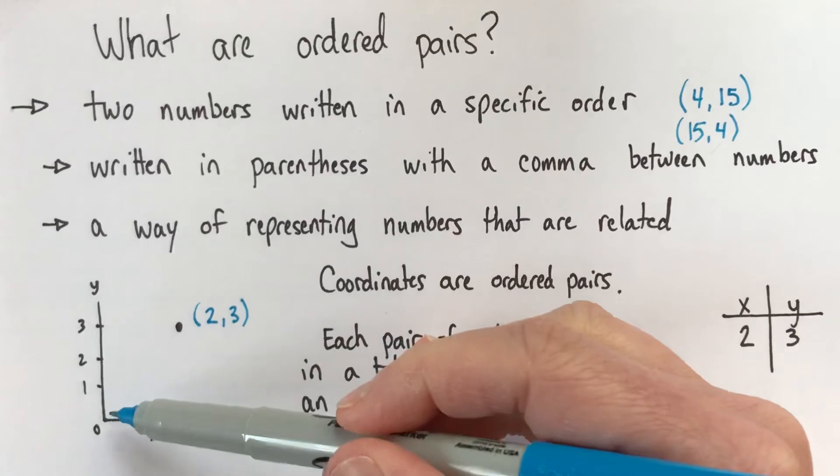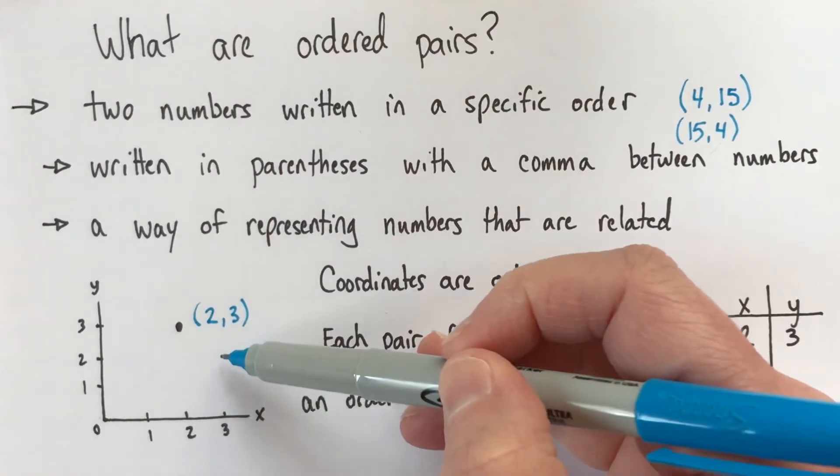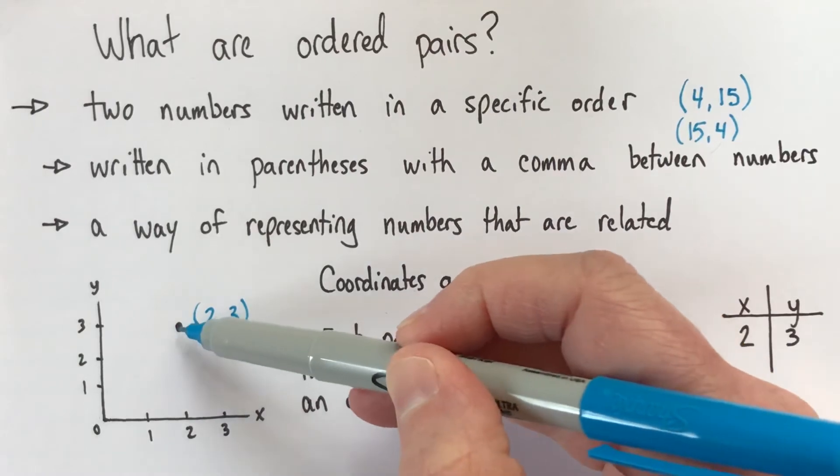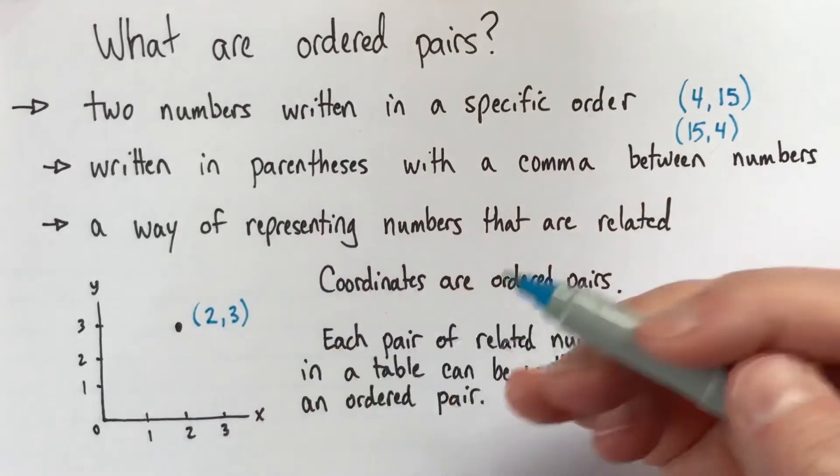If anyone who's learned about coordinates before knows that the point 3, 2 is over here, which is definitely a different point than the point 2, 3. So, the order that they come in is important.